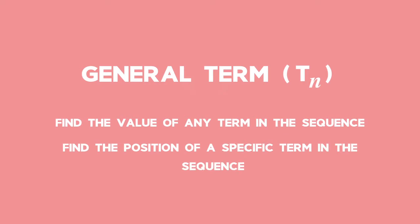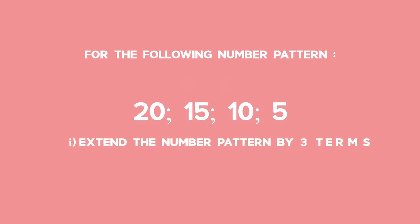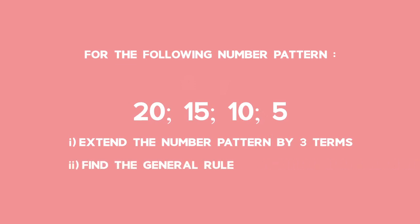Let's look at an example of linear patterns. For the following number pattern — 20, 15, 10 and 5 — extend the pattern by three terms, and find the general rule.